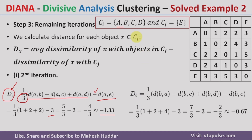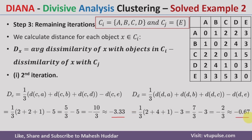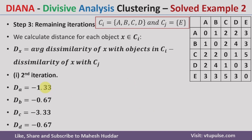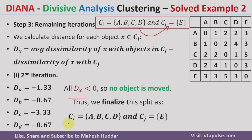Next we calculate the dissimilarity of B, C, and D using the same procedure. The dissimilarity of B is minus 0.67, C is minus 3.33, and D is minus 0.67. Comparing all these values, all of them are less than 0, meaning none of these objects are moved to CJ. So we finalize this split: the first cluster contains objects A, B, C, D and the second cluster contains only E.